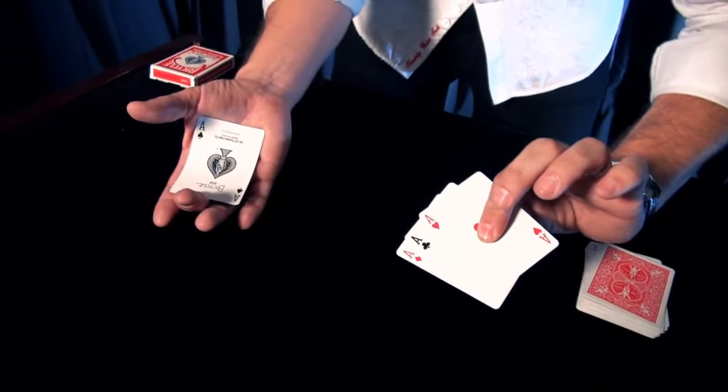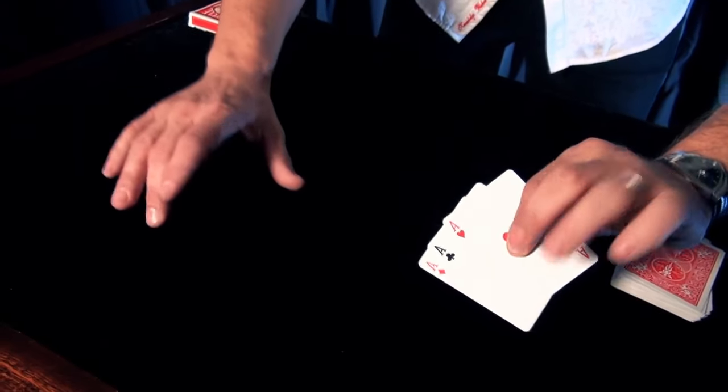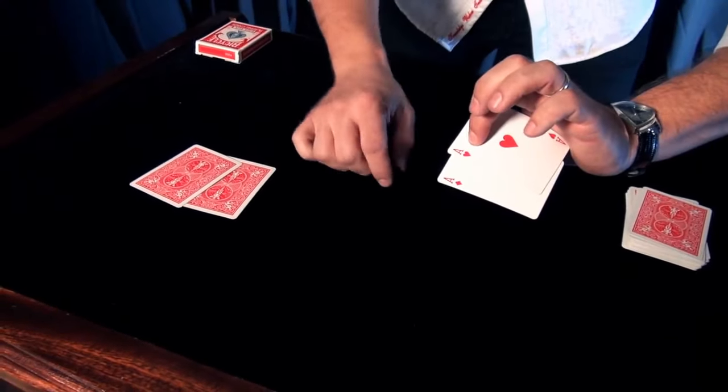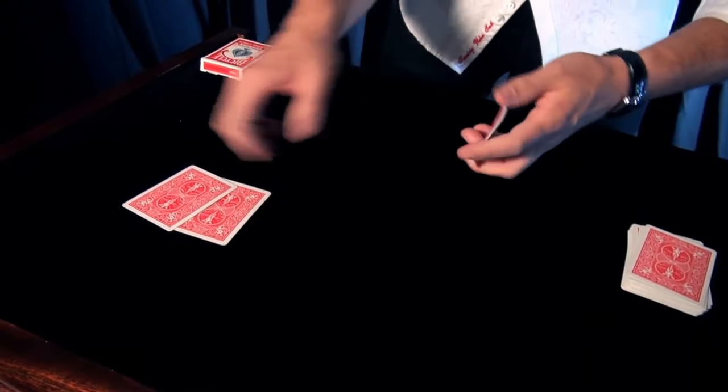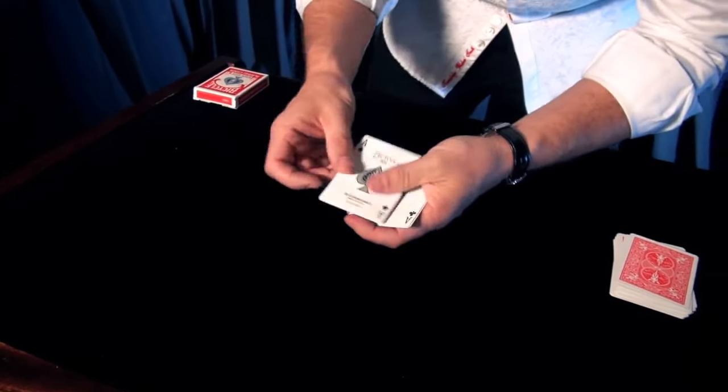Another technique is called the Boy Scout crossover. Check this out. I can take this ace of clubs, for example. If I want to, all I have to do is just cross my hands over just like this. And when I do that, that ace of clubs goes across. Here's the heart and the diamond over here, which means right over here, we have the club and the spade.